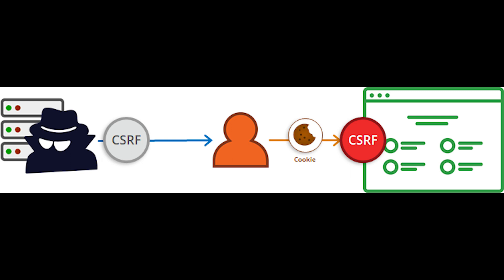An attacker exploits a request forgery vulnerability when a user visits a site designed to force a secondary request to a certain site. For example, a website has an image which needs to be fetched from a certain web page on a target site. When the user's browser tries to fetch the content, it makes a state-changing request on the target site instead, doing something like resetting a password or performing a financial transaction.